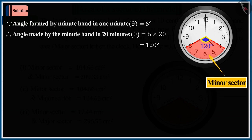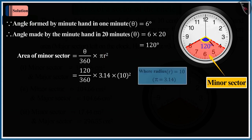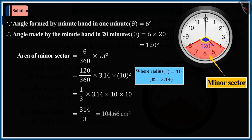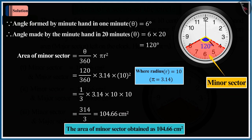This diagram shows the minor sector of a circle. By solving for the area of minor sector, putting theta and R in the formula, the area of minor sector obtained as 104.66 square centimeters.